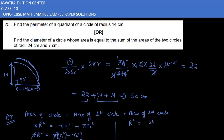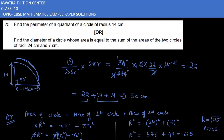R1 squared is 24 squared which is 576, and r2 squared is 7 squared which is 49. Adding these gives 625. Taking the square root, R equals the square root of 625, which is 25. So the radius of the new circle is 25 cm, and the diameter is double that, which is 50 cm.